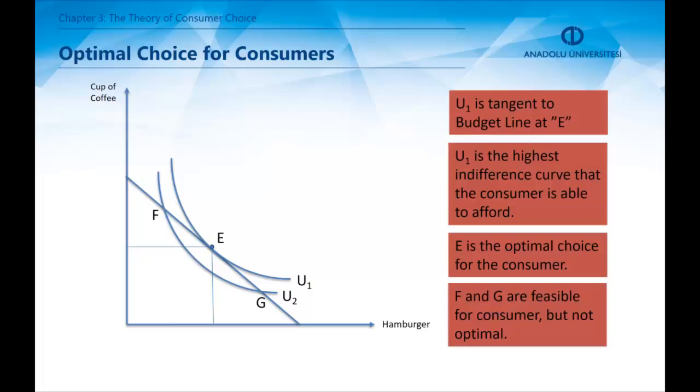There are other points that a consumer can continue his or her life but they are not optimal. On the illustration, point E is the optimal choice. The consumer may be at F, it is possible, but being on point F is not optimal because it is a point on U2 which represents a less utility value.